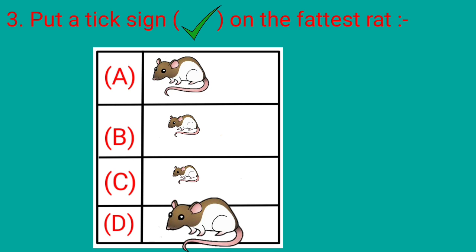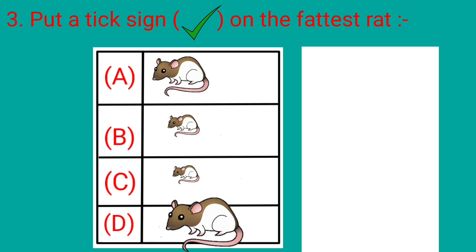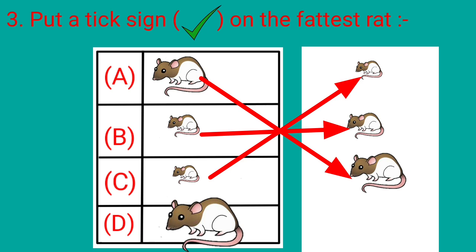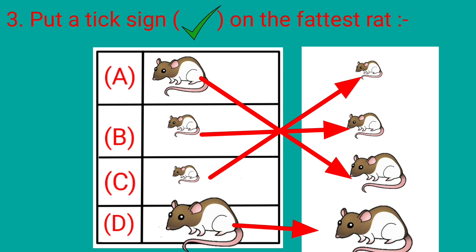On looking at the picture carefully, we notice that the rat in option C is the smallest. Rat B is fatter than C, rat A is fatter than B and C, and rat D is the fattest. So our correct answer is option D — let's tick option D.